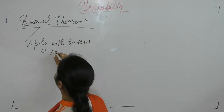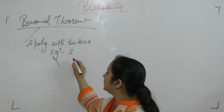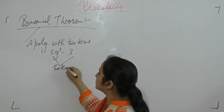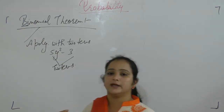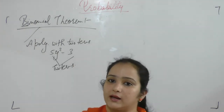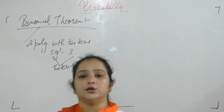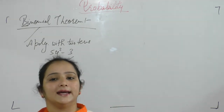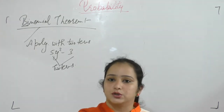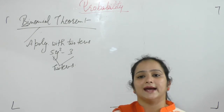For example, 5y squared minus 3. Here, 5y squared is one term and 3 is the other term. So a polynomial with two terms is called a binomial.